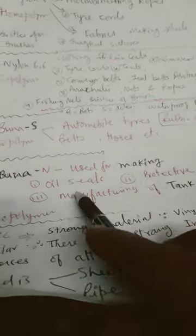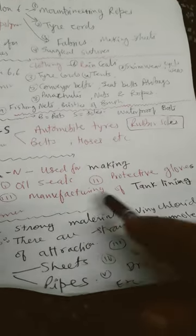Now Buna N is used for oil seals, protective gloves, and manufacturing of tank lining.